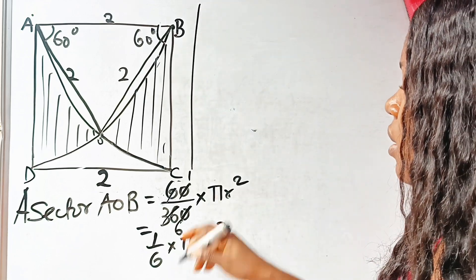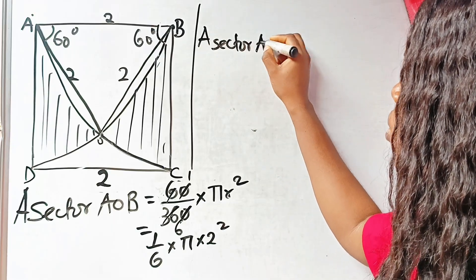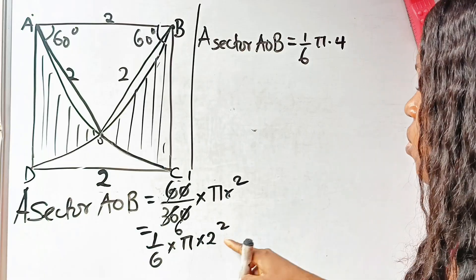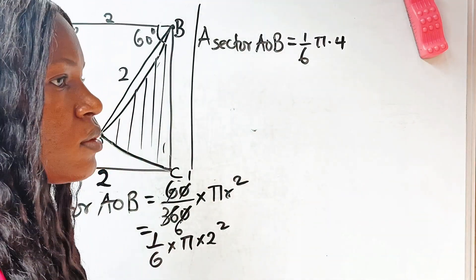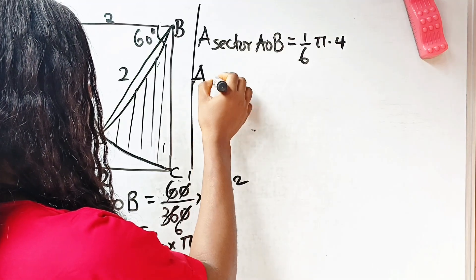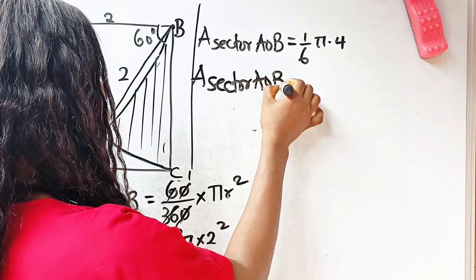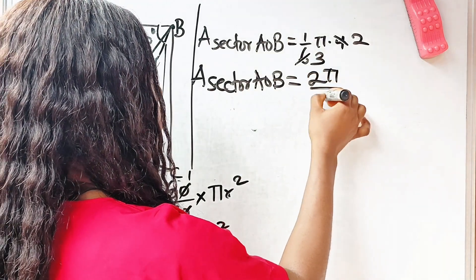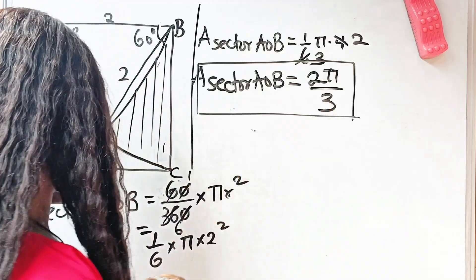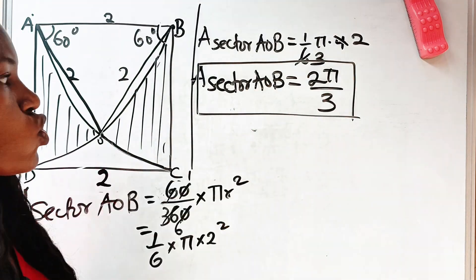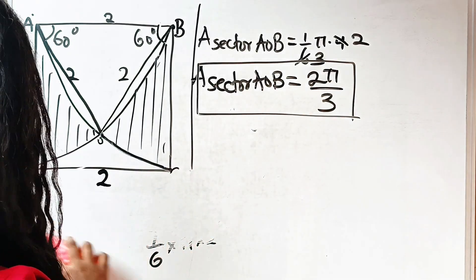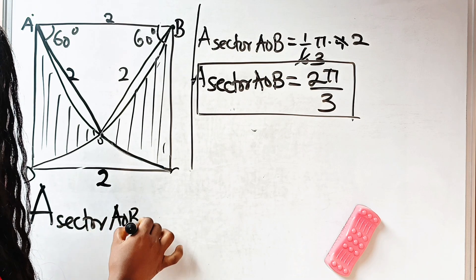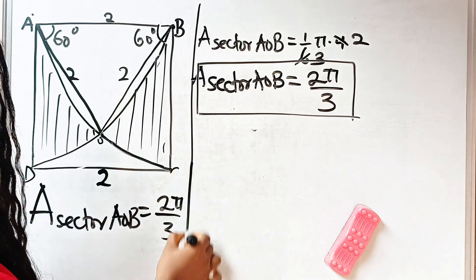If we solve further, we have the area of sector AOB equal to one over six times pi times two squared, which gives us one over six times pi times four. Dividing gives us two pi over three. This is very important — area of sector AOB equals two pi over three.